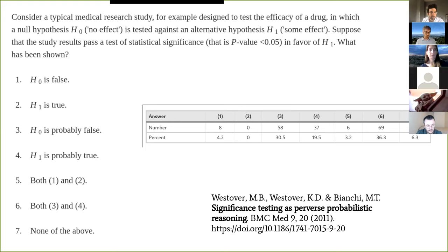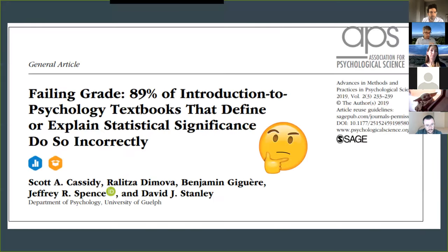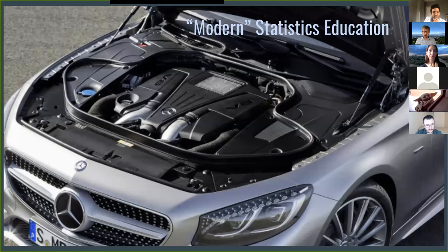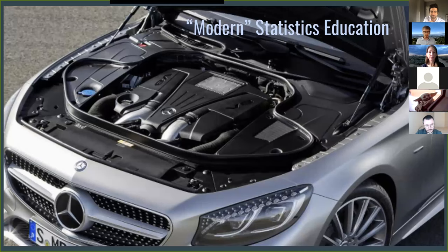The paper argues that the answer should be seven, but you shouldn't feel bad if you get it wrong because so did a lot of experts. This goes to show there's a lot of confusion about statistics and how to interpret it. If you read the kinds of papers I enjoy reading, you'd think we're doing a pretty terrible job at teaching statistics. Look at this one: 'Failing Grade — 89% of introduction to psychology textbooks that define or explain statistical significance do so incorrectly.' A lot of modern statistics education feels like looking under the hood of a modern car — underneath there's this beautiful engine, but you really can't see what's going on in there.